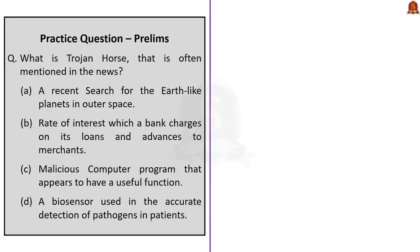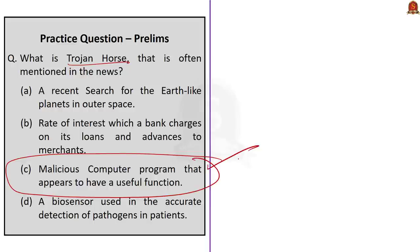The next question asks what is the Trojan horse often mentioned in the news. Option A: a recent search for earth-like planets in outer space. Option B: rate of interest a bank charges on loans and advances to merchants. Option C: malicious computer program that appears to have a useful function. Option D: a biosensor used in accurate detection of pathogens in patients. The correct answer is option C: malicious computer program that appears to have a useful function.